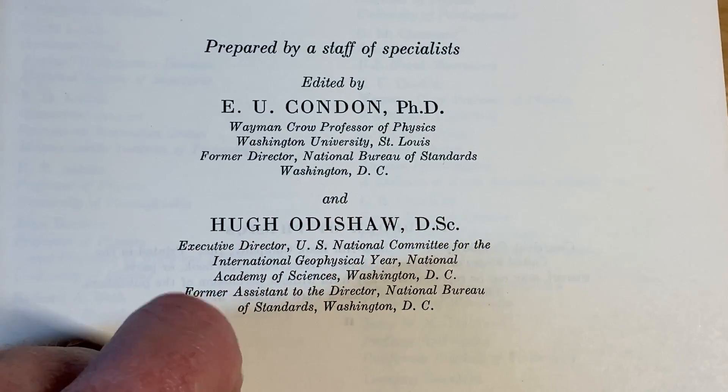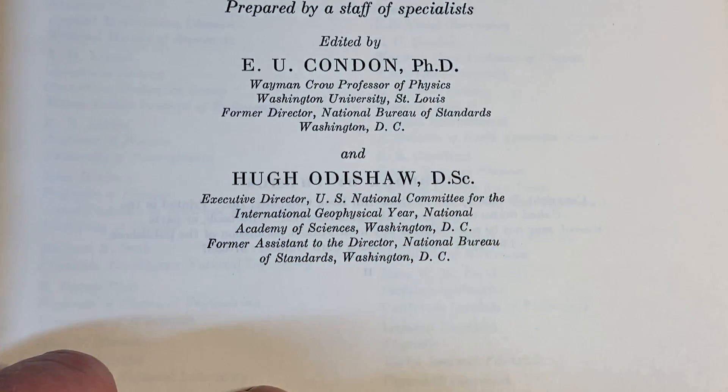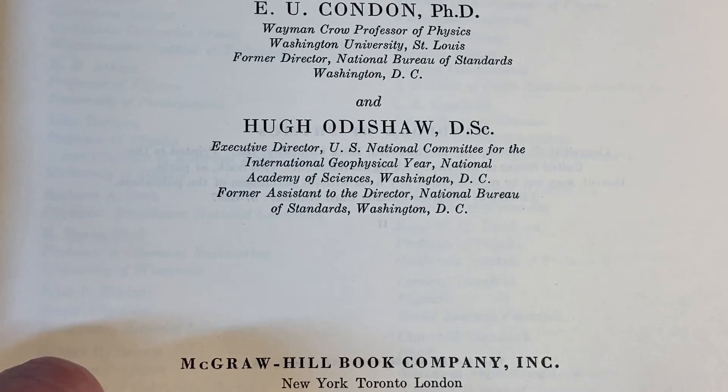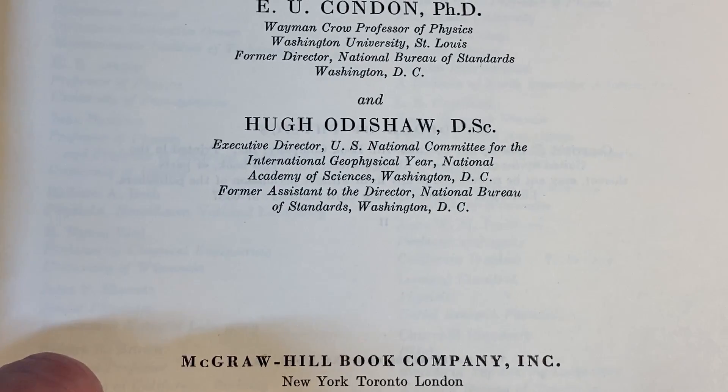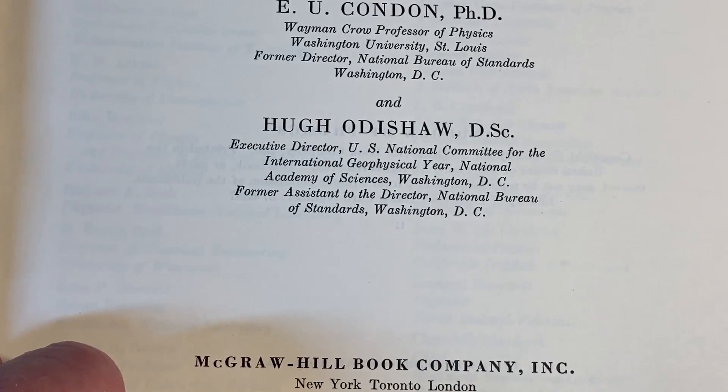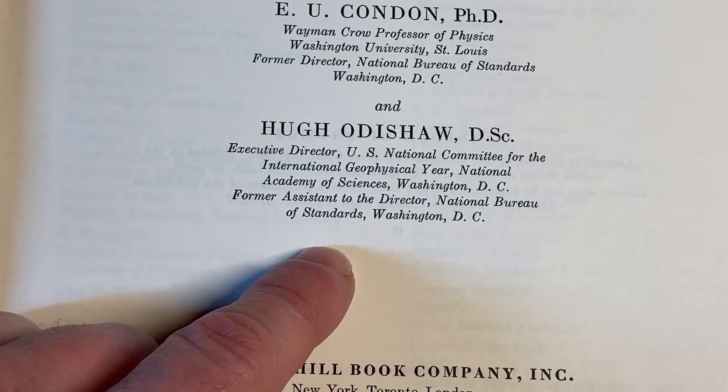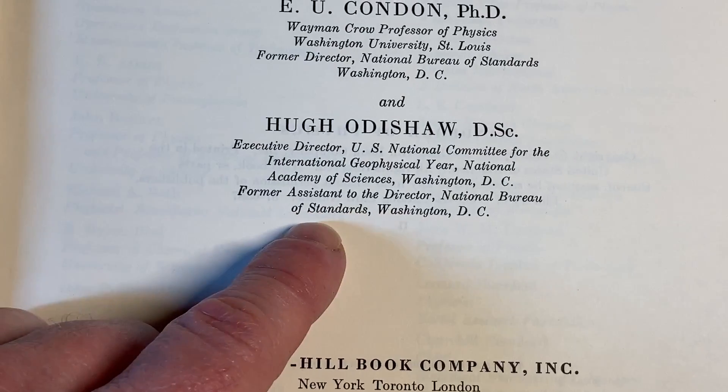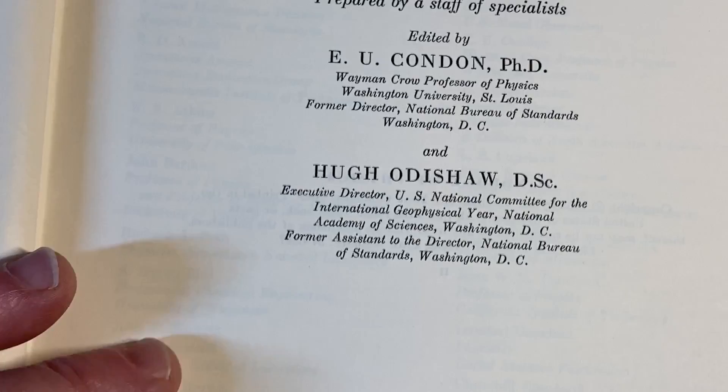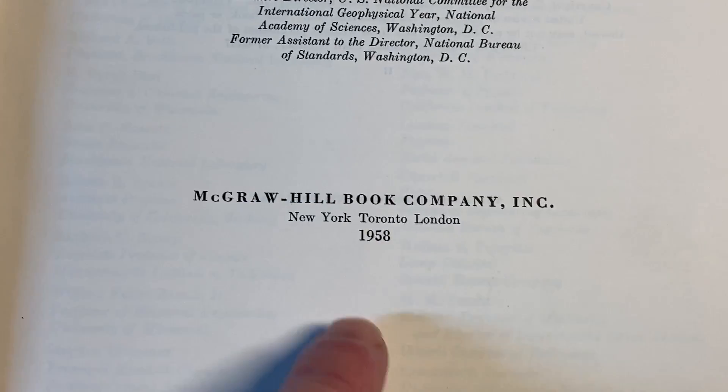Former Director, National Bureau of Standards, Washington, D.C. Then we have Hugh Odishaw, Executive Director, U.S. National Committee for the International Geophysical Year. Wow. National Academy of Sciences, Washington, D.C. And former Assistant to the Director at National Bureau of Standards, Washington, D.C. So that's probably how they know each other, right? Condon and Odishaw. I guess they were really good friends.